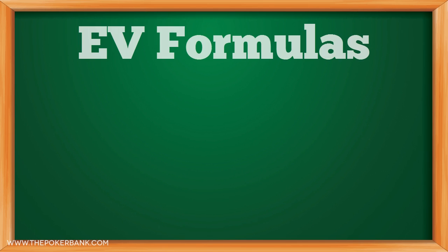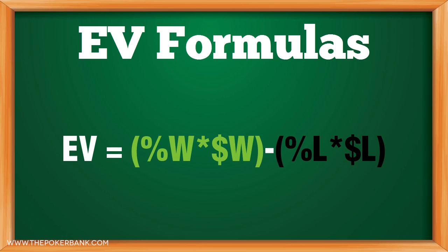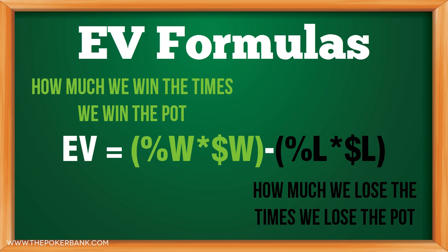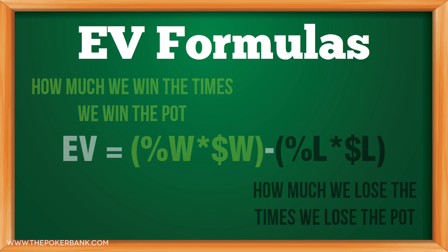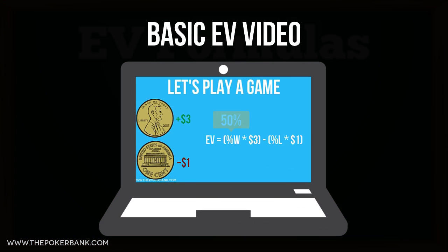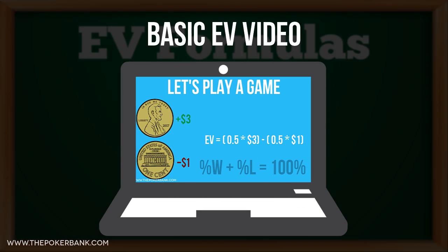The basic EV formula we worked with in the past was: EV equals %W times money W minus %L times money L. Essentially what we stand to win multiplied by how often we'll win, minus what we stand to lose multiplied by how often we'll lose. If this seems confusing at all, please first watch the basic EV video and then come back to this one.